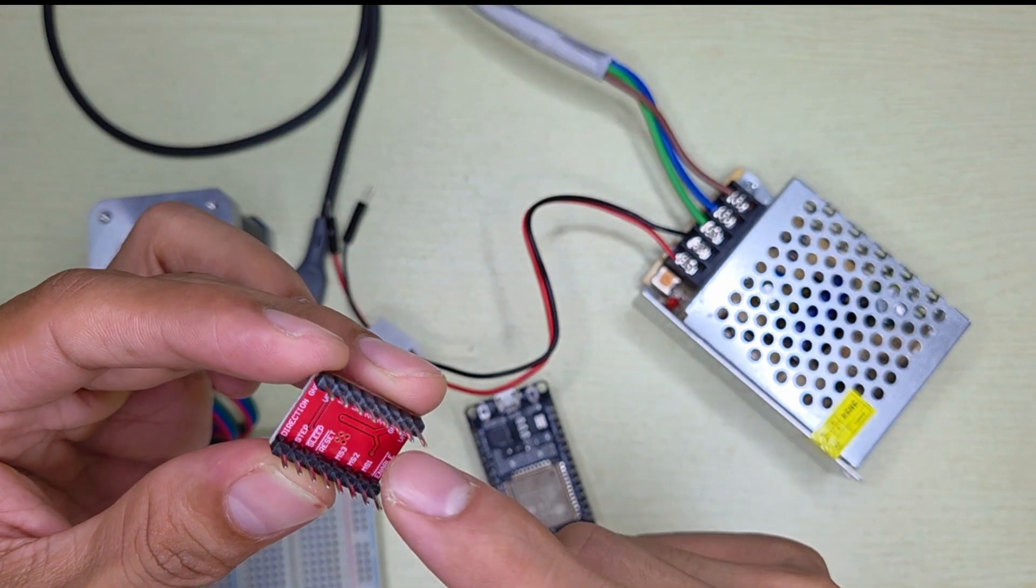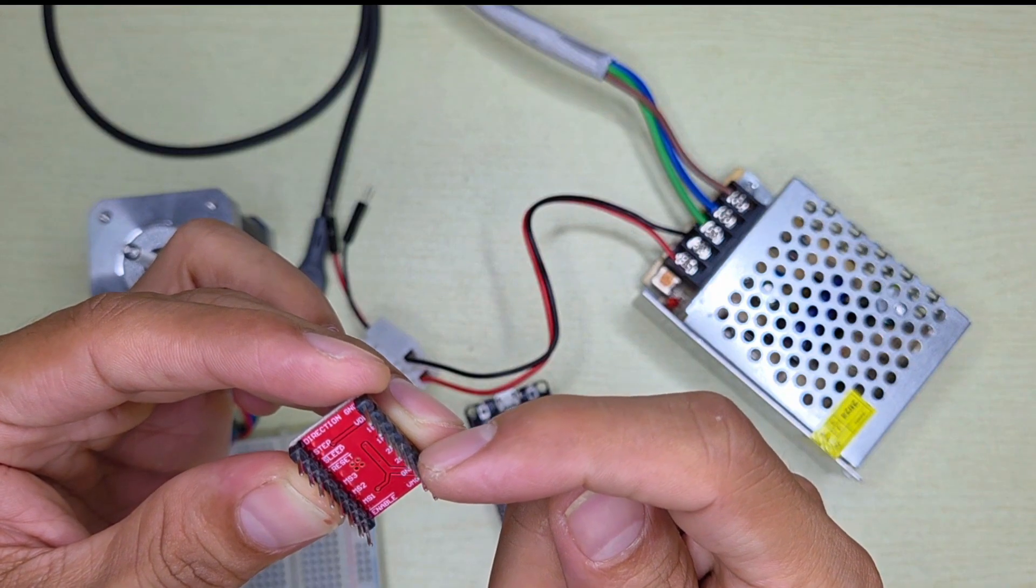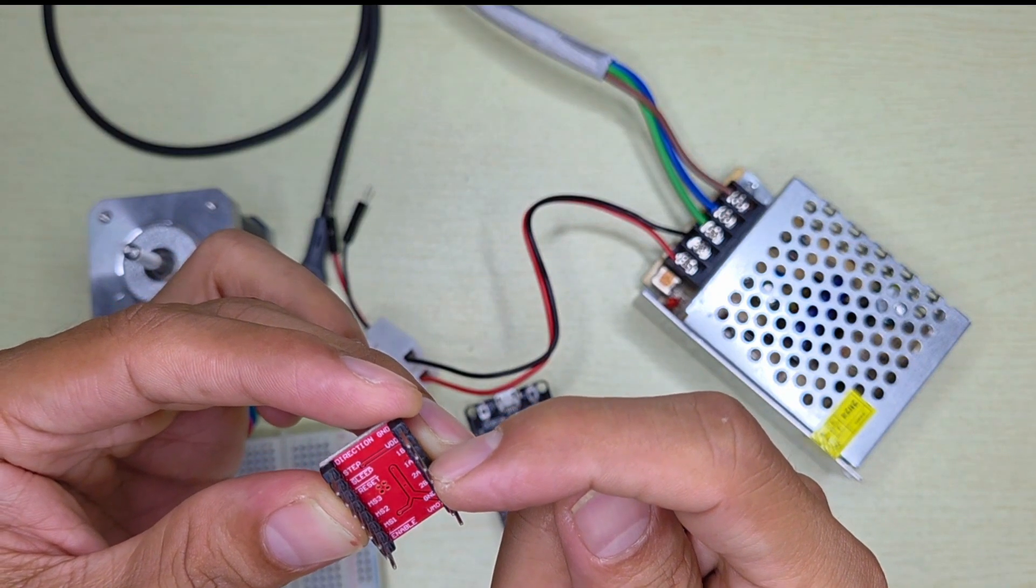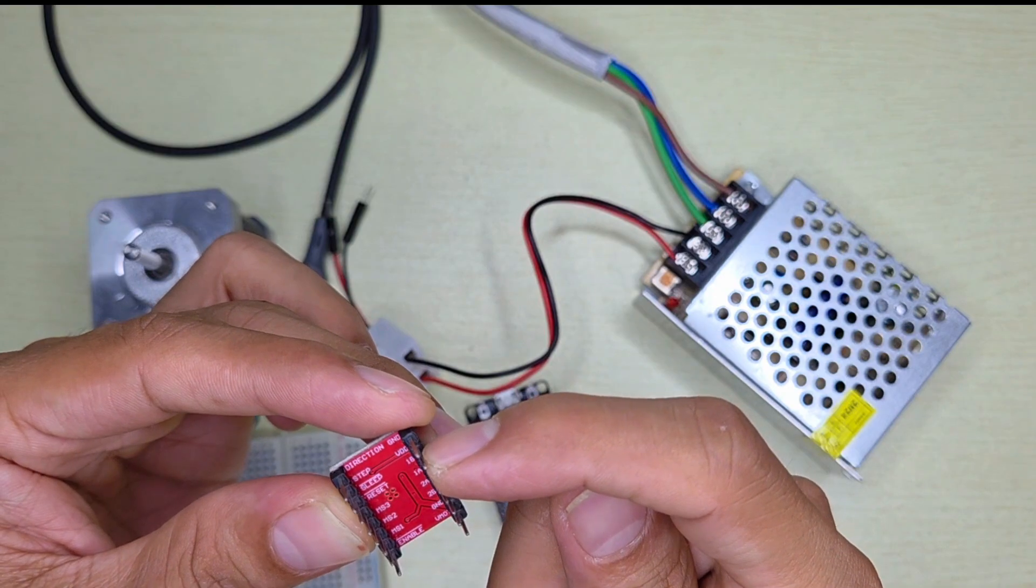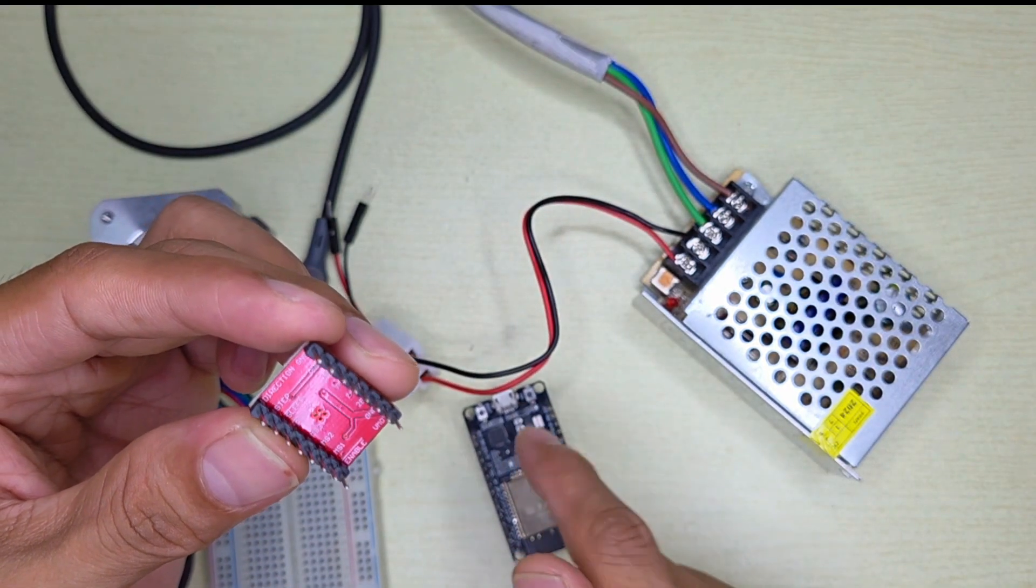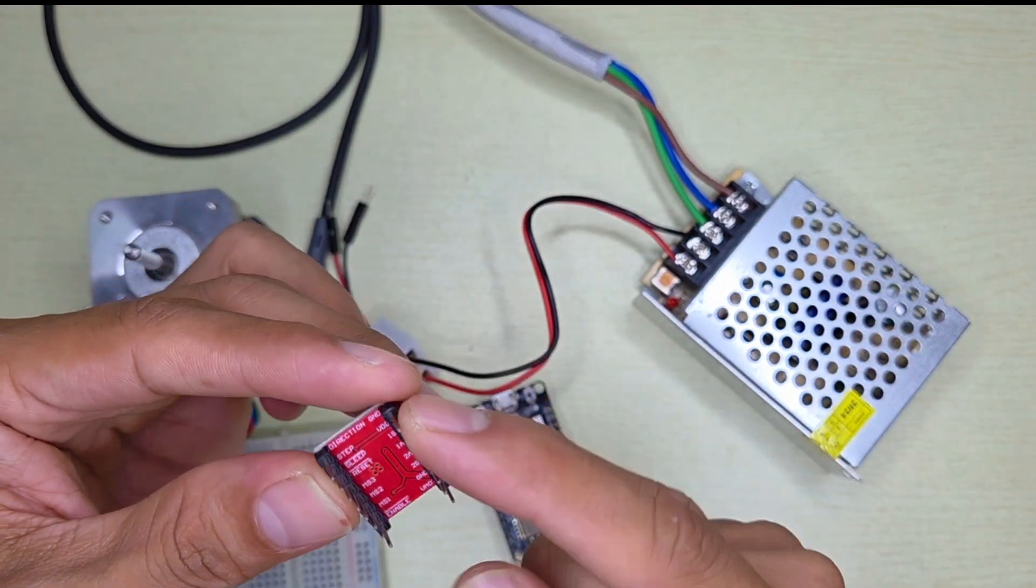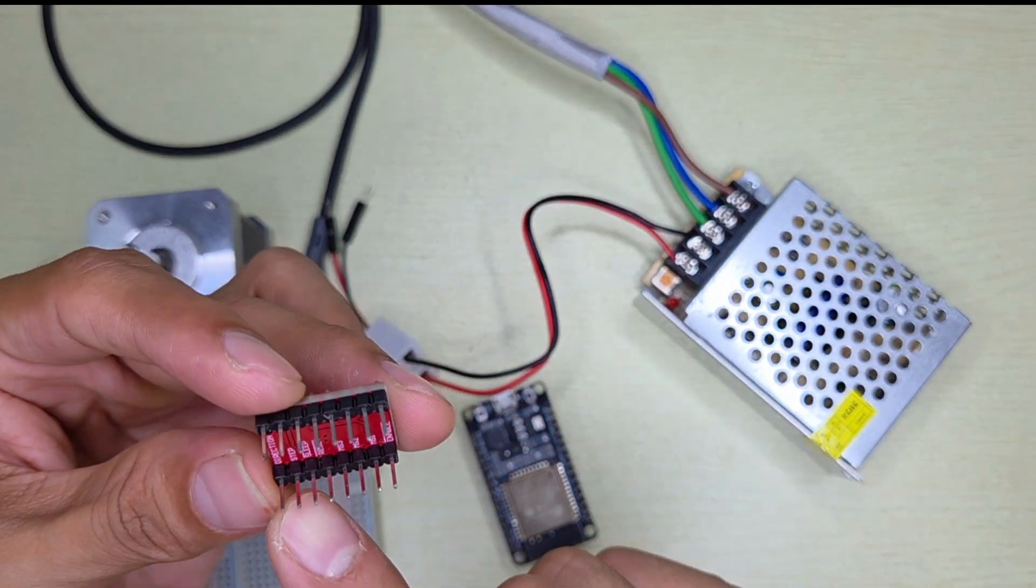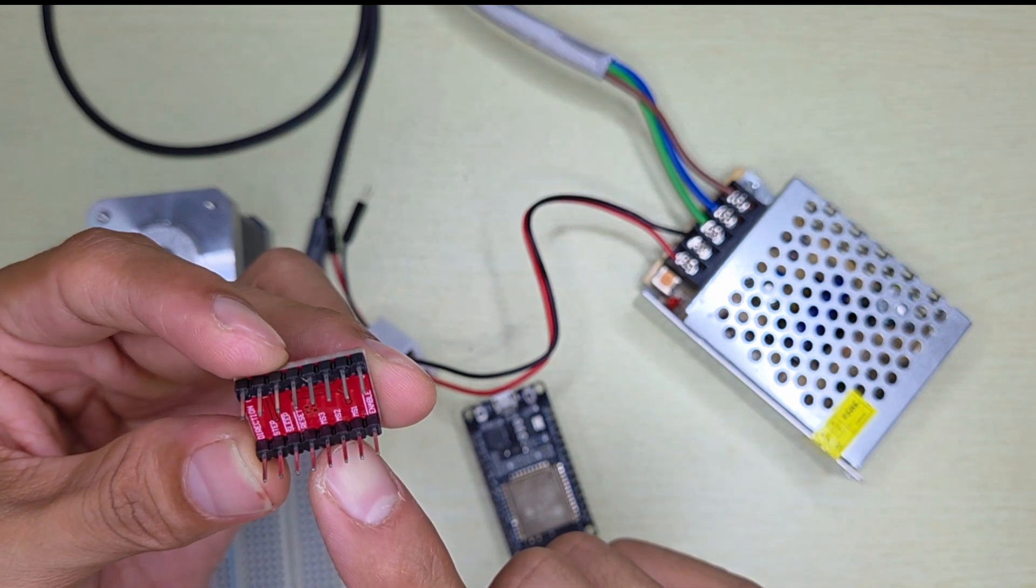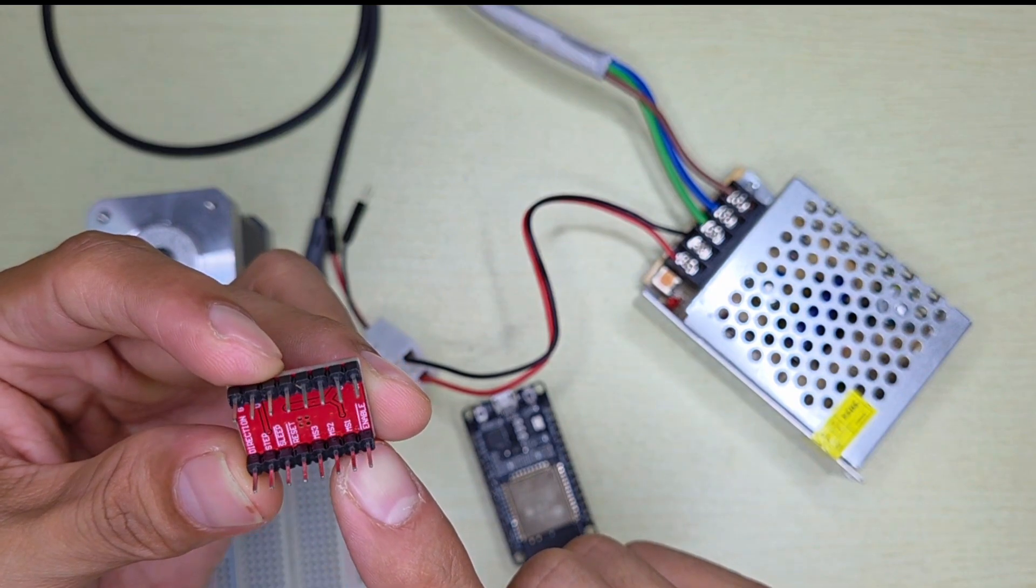This VMOT is 12-volt input, this is 12-volt positive and 12-volt negative. Here is the stepper motor bipolar connection: 2B, 2A, 1A, 1B. VDD is where we're going to supply 3.3 volts from ESP32 to the VDD pin here, and the ground from ESP32.